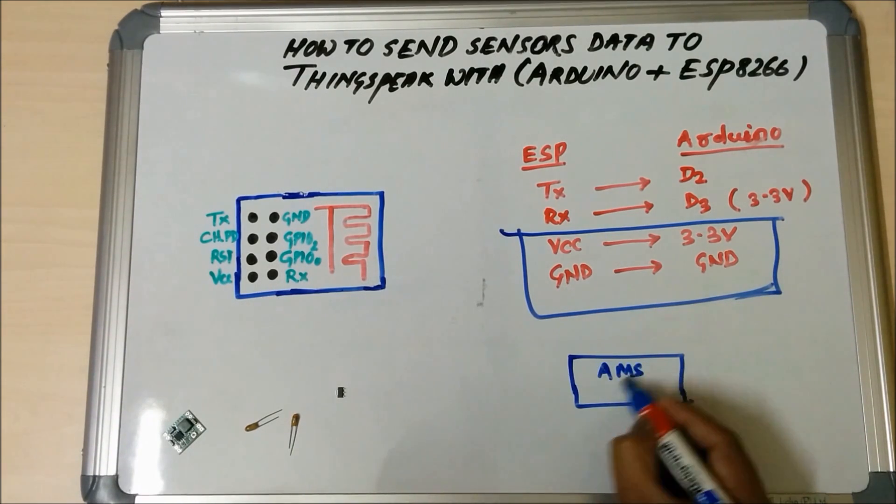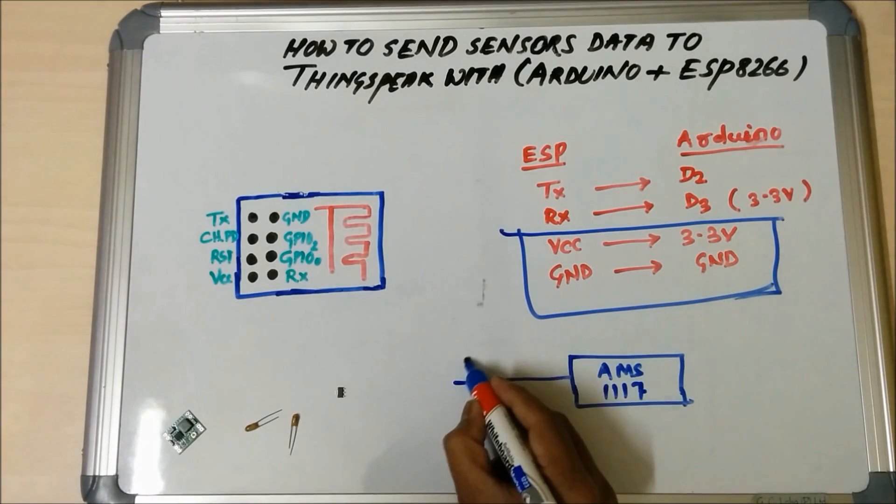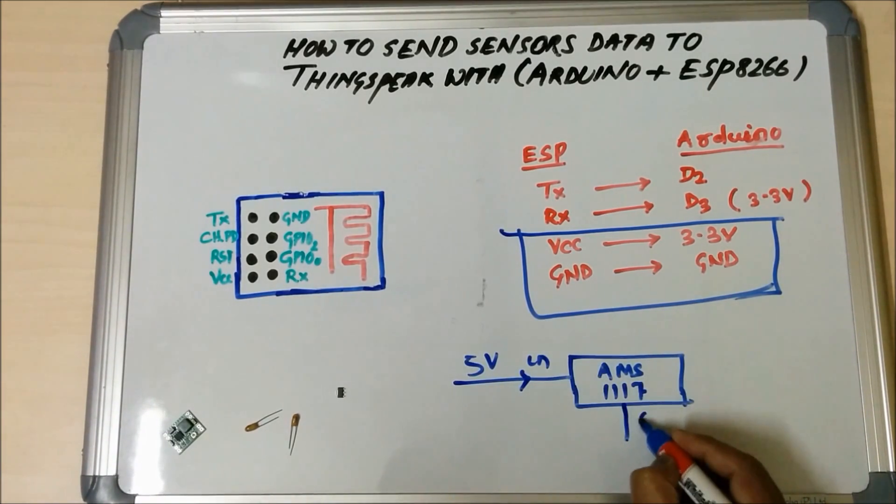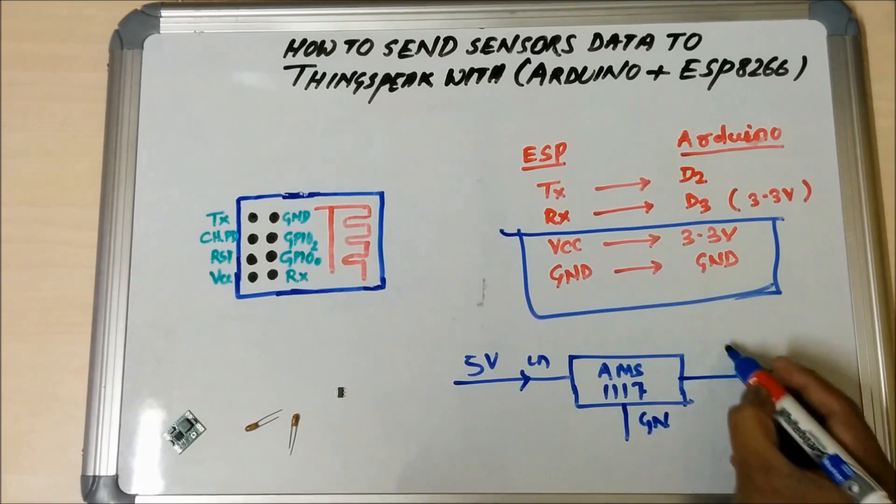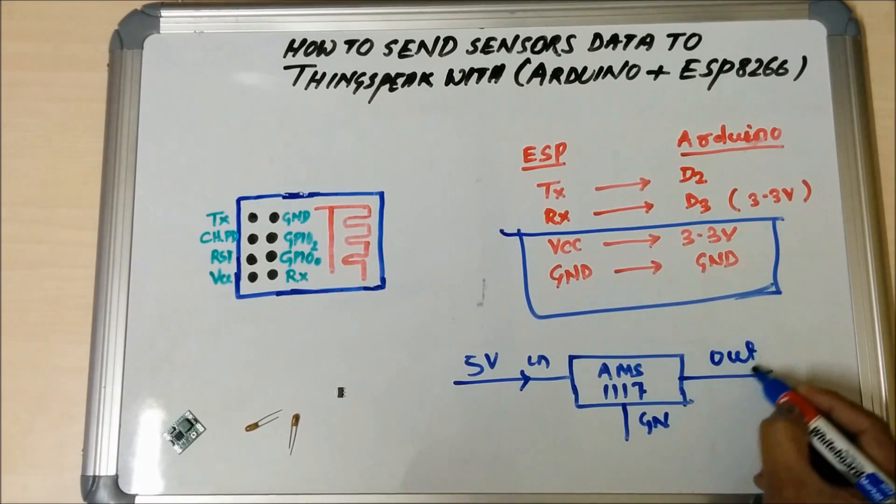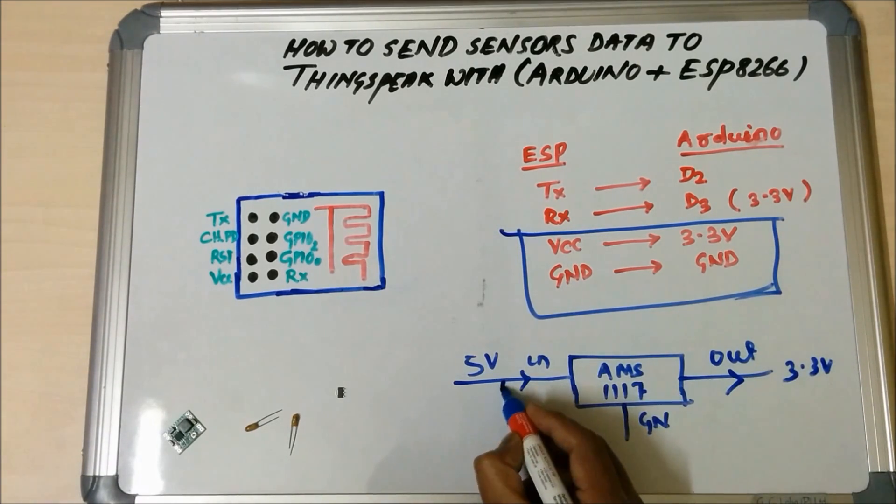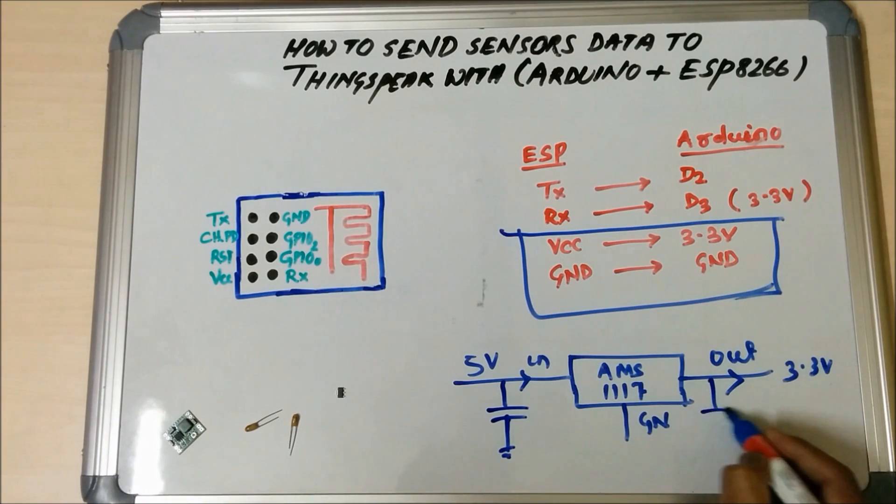This is AMS1117 and this is our 5V in and this is ground and this is output. We get 3.3V and we need two caps of 10uF.